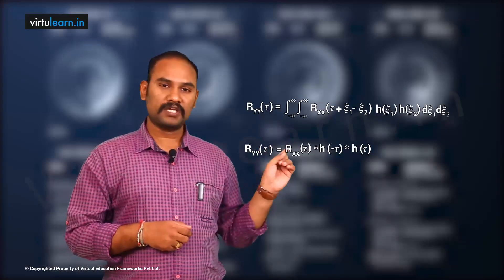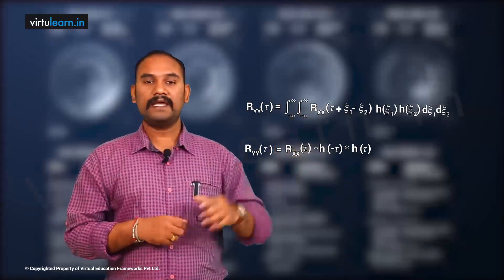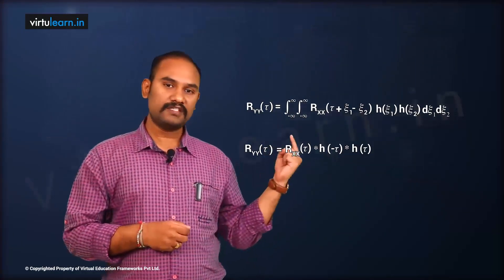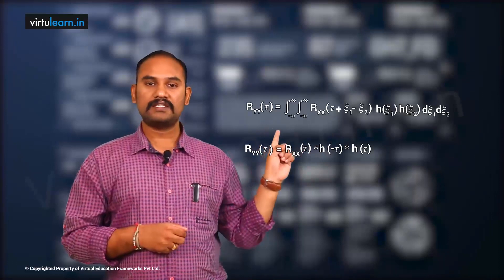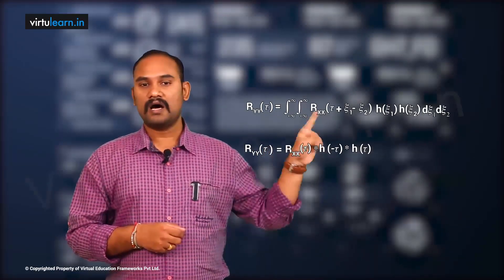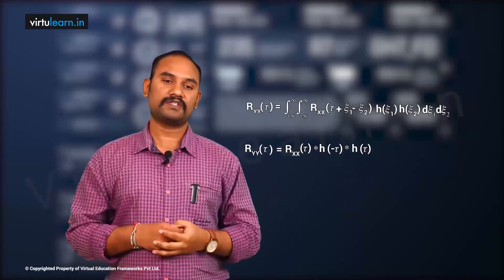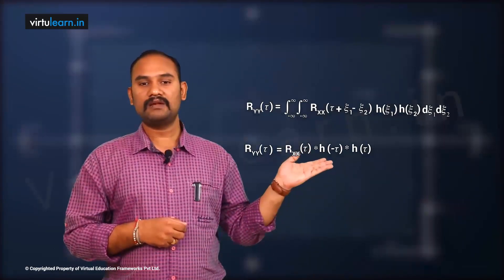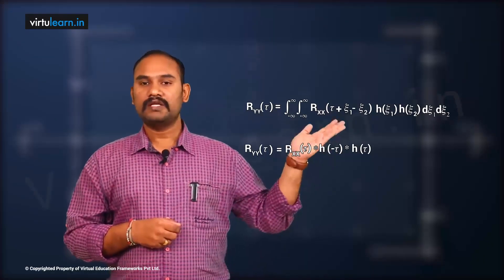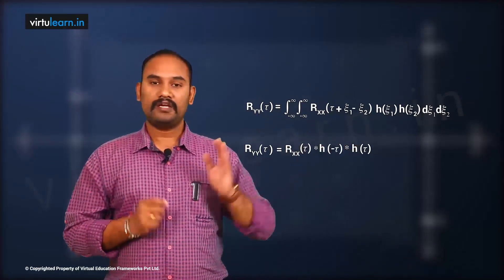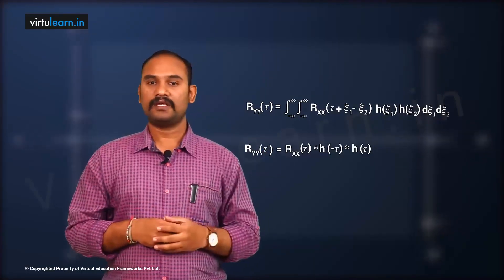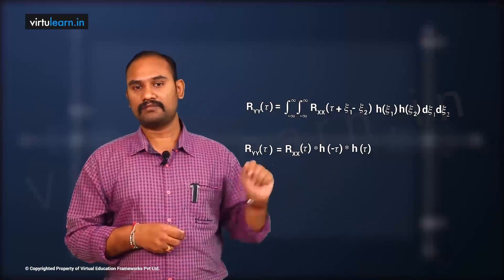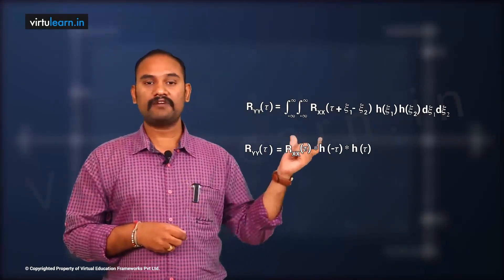So the ACF of the response on the LHS is expressed in terms of the ACF of the input random process on the RHS. This is a convolution operation: the double integral of Rxx(τ + ζ₁ − ζ₂) · h(ζ₁) · h(ζ₂). In normal convolution we have one h(τ) and a single integral, but here we have h(ζ₁) · h(ζ₂) and a double integral.